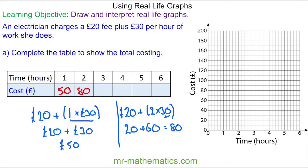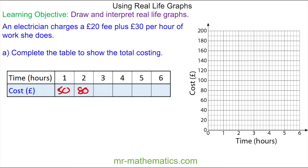Do you want to try and work out the cost for three to six hours work? You can pause the video and resume it when you're ready. Okay, for three hours, we have the £20 call out charge plus now three lots of £30 hourly charge, which is £20 plus £90, which is £110.